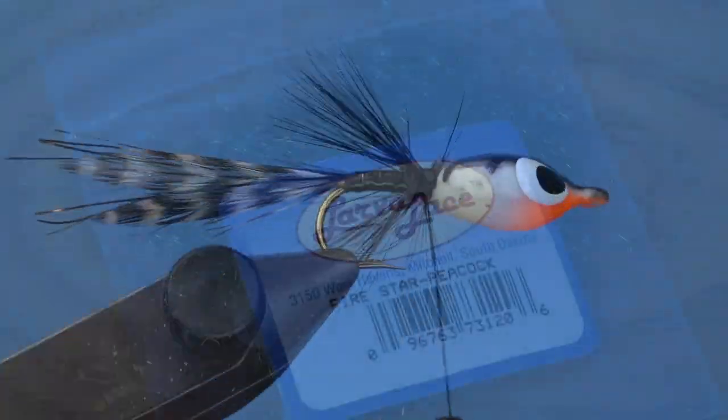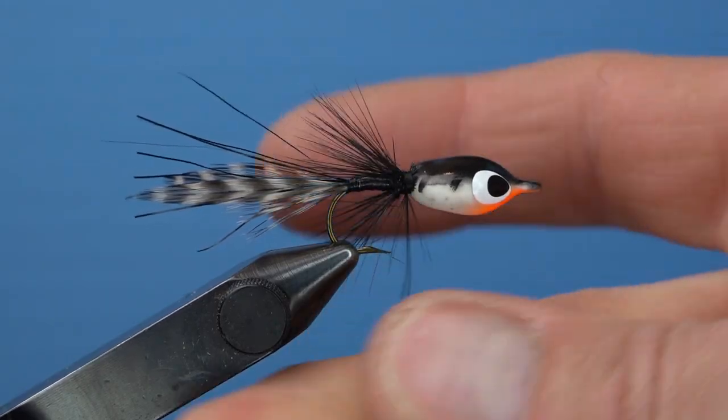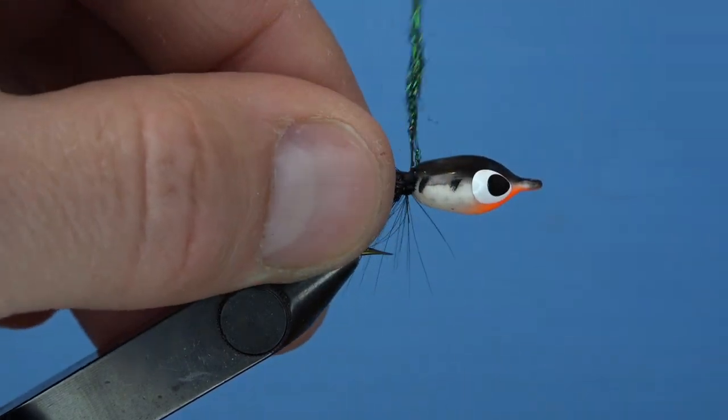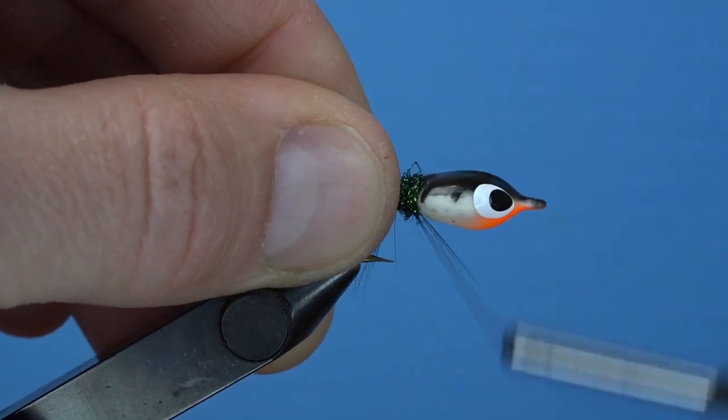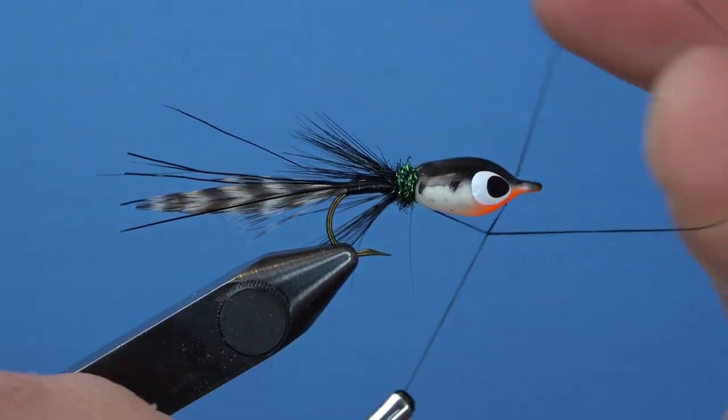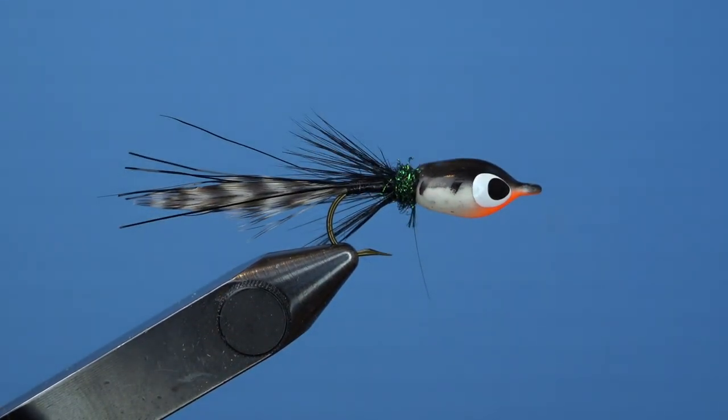Let's cover up that thread collar with a little bit of flashy Firestar dubbing. This is Peacock. Dub about a three inch noodle on your thread and wrap a nice robust dubbing ball in between your hackle and your foam head. This will help lay those hackle fibers back a little bit too. Add a few half hitches or a solid whip finish at the end, and then go ahead and trim your thread.